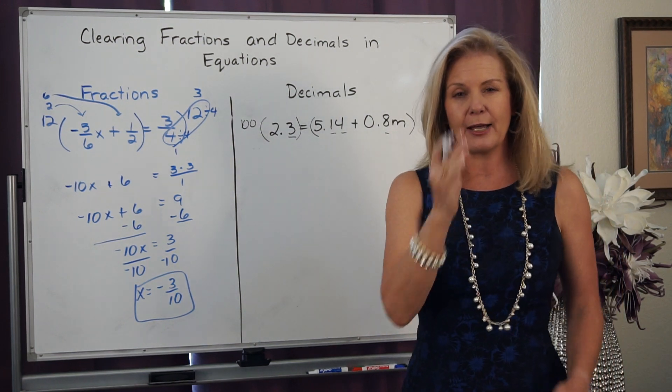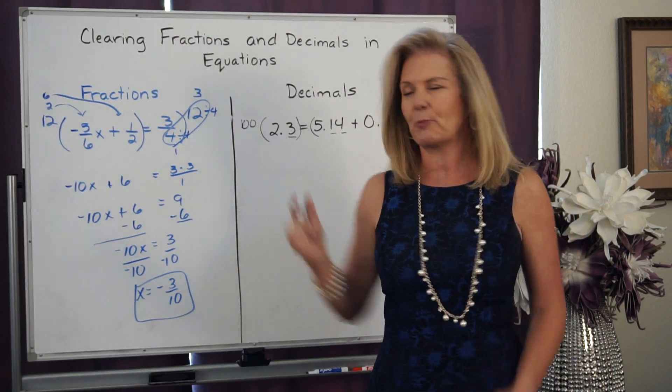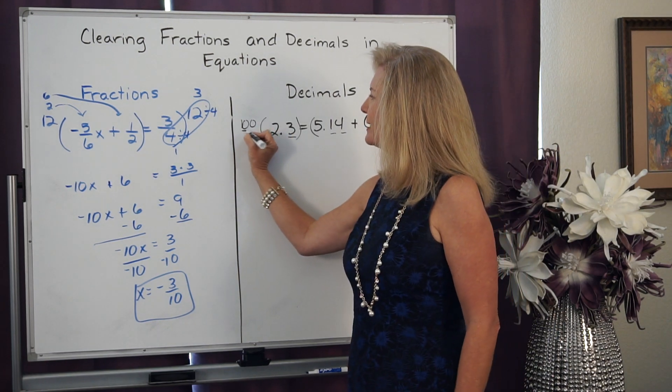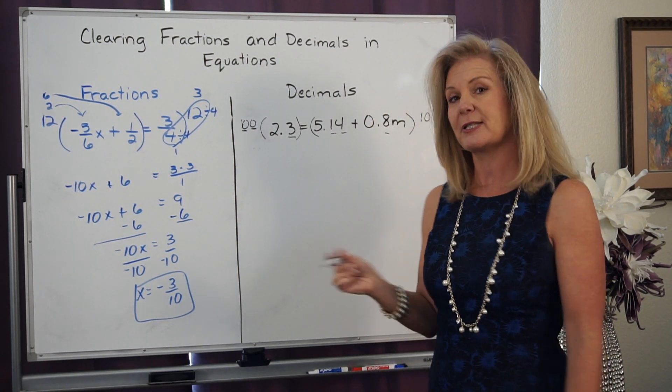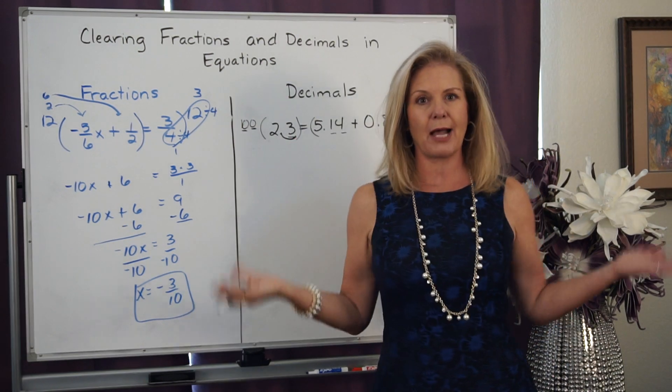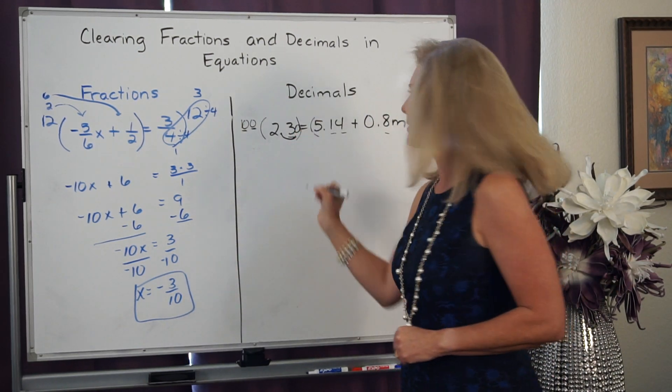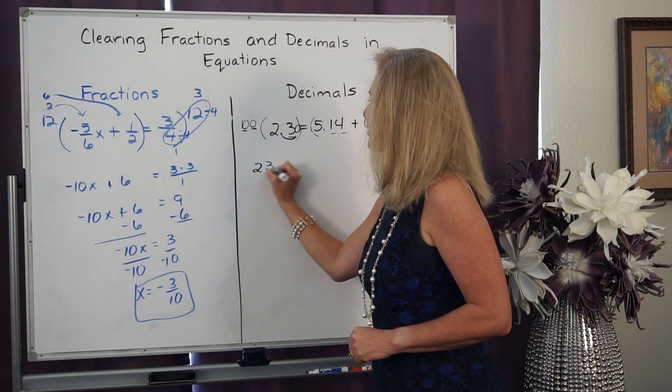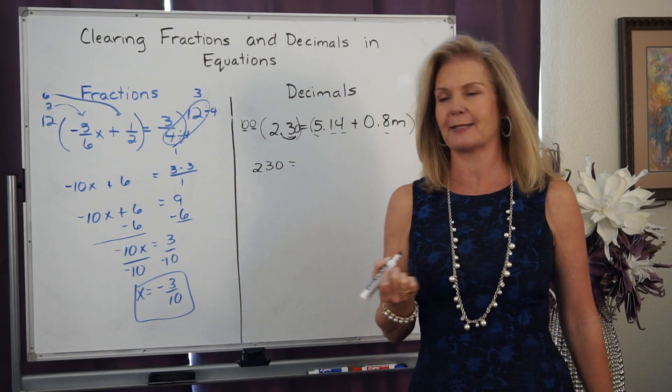When I multiply by 100, it's going to move those decimal points. And you're going to move one decimal point for each of those zeros. And I'm going to move it to the right. So I'm going to move it one place. I'm out of numbers. I'm going to annex a zero. So that becomes 230. Notice, no more decimals.